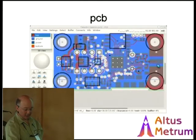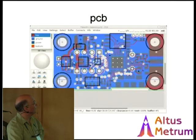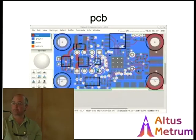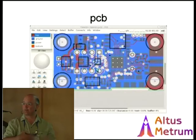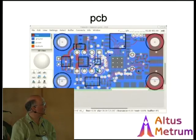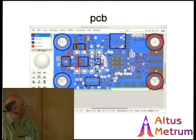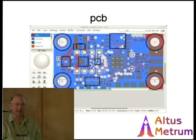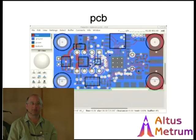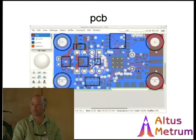Off the back end, it's got some FETs and connectors to hook up explosive charges that control the deployment of parachutes. Pretty simple. This board is about eight-tenths of an inch by an inch and a half — about two centimeters by four centimeters. Pretty darn tiny.